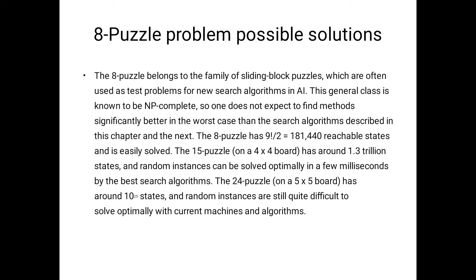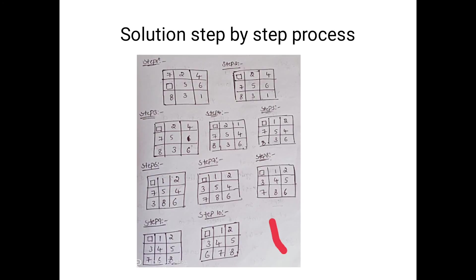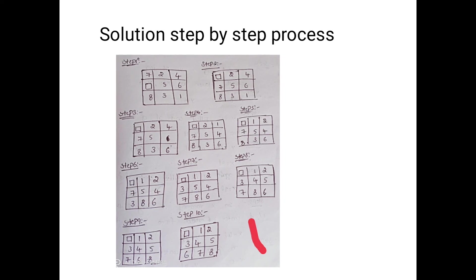A note on the earlier solution: from step three onward there is a small mistake — six and one are incorrectly shifting. We should only move the blank space. So please observe that the wrong process was applied from step three. Please refer to the corrected solution.